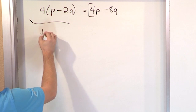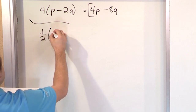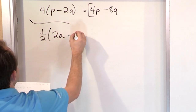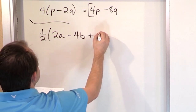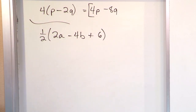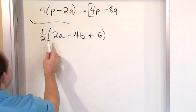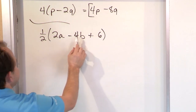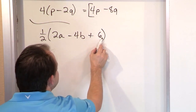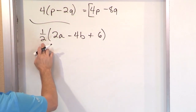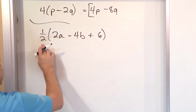What if we had 1 half times the quantity 2a minus 4b plus 6? So again, I would like to try to simplify everything inside, but they're all different — a, b, and then this term doesn't even have a variable. So they're all unlike. All I can really do is distribute the 1 half into each one of these things.